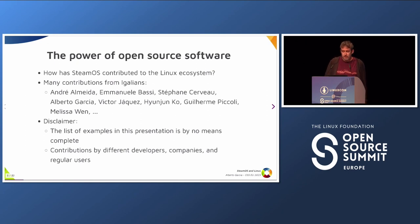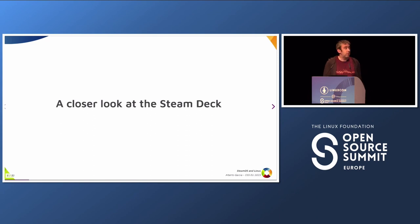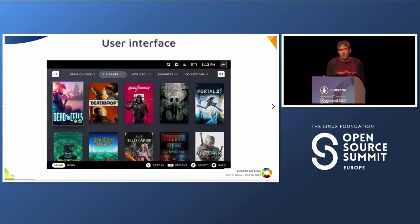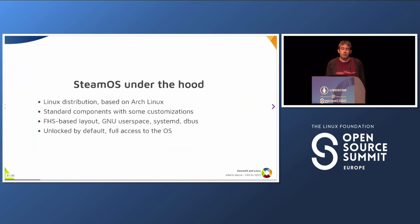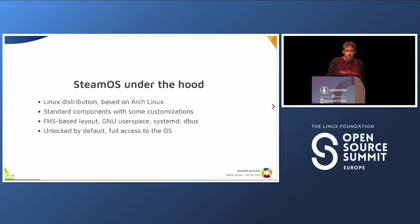The Steam Deck is a gaming machine, and this is the basic user interface you get when you start it — the Steam client browsing the Steam store, where you can buy games, browse discussions, and play games. For the purpose of this presentation it's maybe not the most interesting part; this is just a regular Steam client running in full screen. But under the hood this is running a Linux distribution based on Arch Linux. It has a few customizations but overall is a typical Linux distribution with a FHS-like layout, systemd, D-Bus, and all the usual user space components.